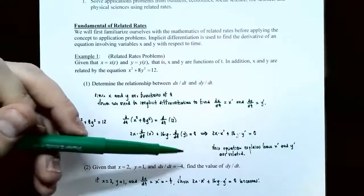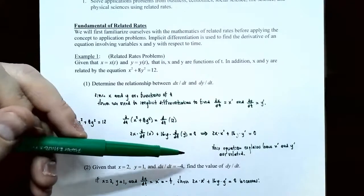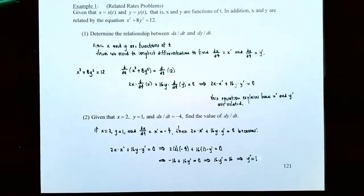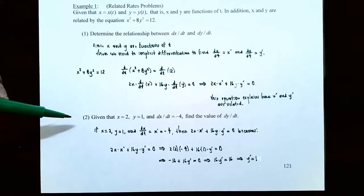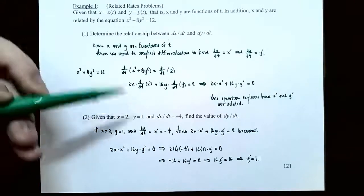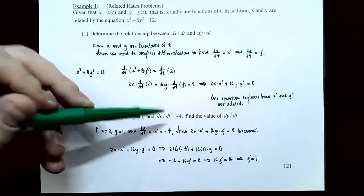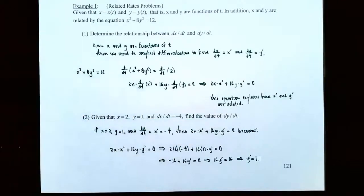This equation explains how x prime and y prime are related to one another. After using implicit differentiation to introduce the derivatives, we use information from the problem to find the values. Part two: given that x equals 2, y equals 1, and dx/dt equals negative 4, find the value of dy/dt.